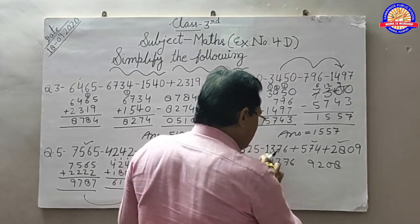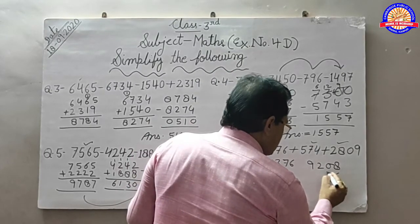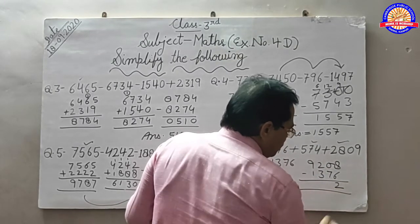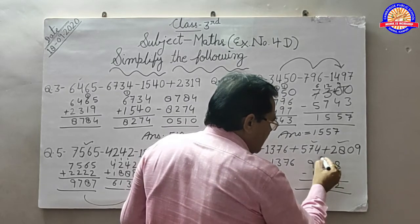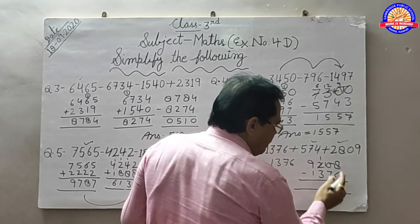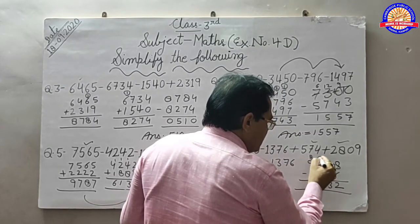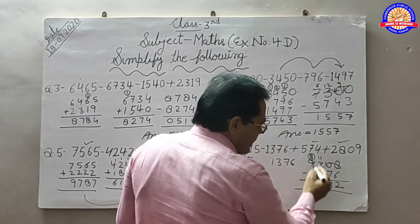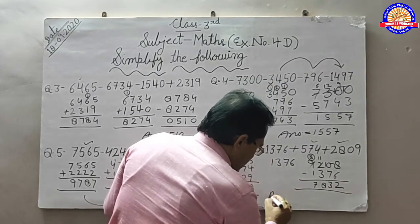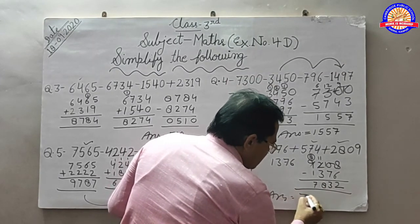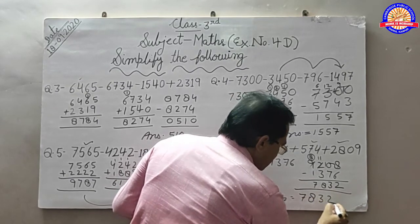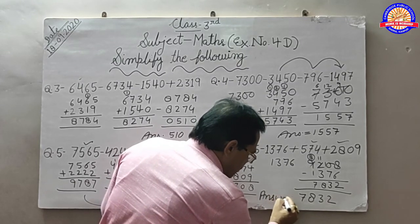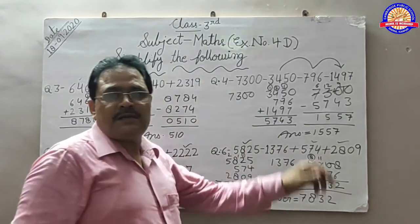इसके नीचे इस नम्बर को जो आपने last किया है लिखेंगे: 6, 7, 3, 1. इसको minus. यहाँ से minus नहीं होगा, यहाँ से carry लिया: 1, 10 से घटाएंगे: 3. यहाँ से minus नहीं होगा, carry लिया. यहाँ पर 8 minus करेंगे. 7, 7. Answer equal: 7, 8, 3, 2. Answer की spelling: A, N, S, W, E, R. Okay.